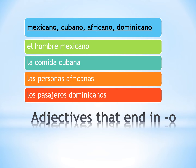We have adjectives that end in O, like Mexicano, Cubano, Africano, Dominicano. Here are some examples of how they would be used to describe a noun. El hombre mexicano. La comida cubana. Las personas africanas. Los pasajeros dominicanos.